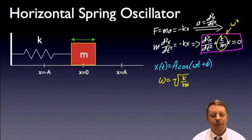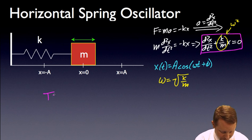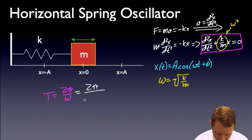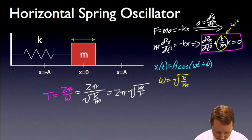Now if we want to find the period of oscillation, remember that period, T, is 2 pi over omega. Where again, omega is square root of k over m. So, that's going to be 2 pi over the square root of k over m, which is equal to 2 pi square root of m over k.